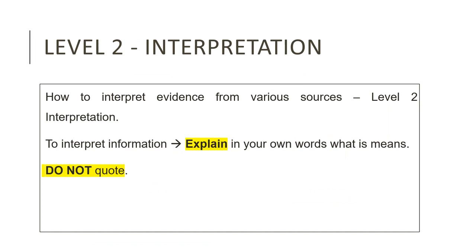Another skill taught in history, also examined in your NSC examination, is how to interpret evidence from various sources. The questions an examiner uses to examine this skill are called Level 2 interpretation questions. To interpret information means you need to explain what you understand from the information given to you in the source. When writing down your answer, you cannot quote the answer directly from the source — you have to explain what the information in the source means and explain it in your own words.